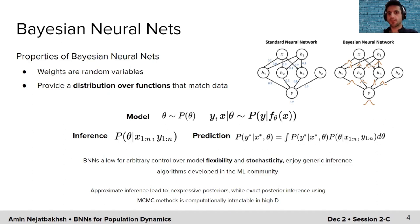However, approximate inference usually leads to inexpressive posteriors in BNNs, and the exact posterior inference is not possible using MCMC methods in a very high dimensional setting. With this, I'll hand it over to my collaborator, Julian.